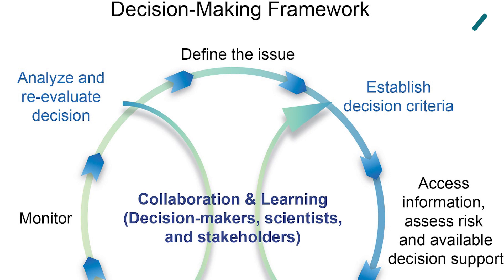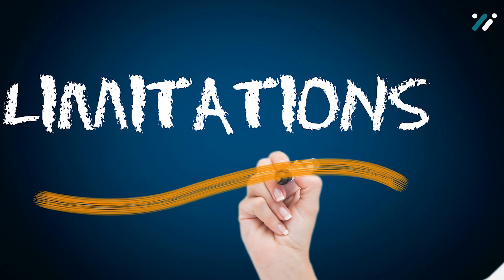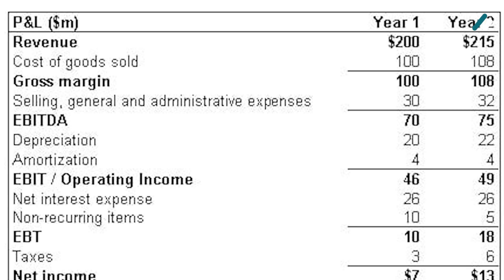However, EBITDA has its limitations. Exclusion of interest and taxes: while it isolates operational performance, EBITDA does not consider the cost of debt or tax obligations, which are crucial financial aspects. Exclusion of other expenses: EBITDA does not account for all non-cash expenses, such as depreciation, which may impact the overall financial health.